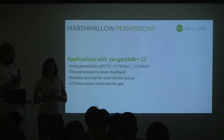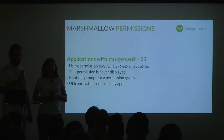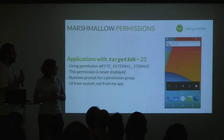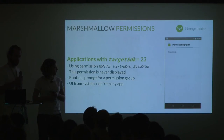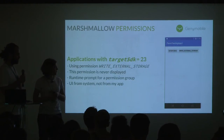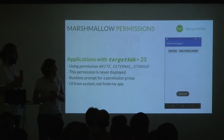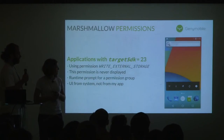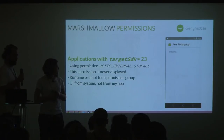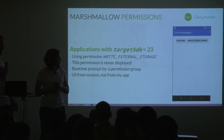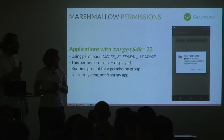In Marshmallow, the behavior depends on the target SDK of the application. When you're targeting the Marshmallow SDK, aka level 23, and requesting a dangerous permission, the system actually prompts you for the permission group at runtime. You can see the installation of the app doesn't show any permission at all — it's a runtime request. The UI is from the system, not Google Play or the installer. The permission itself is never displayed; it's only shown behind the group.